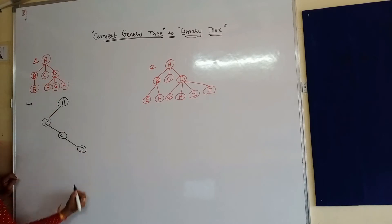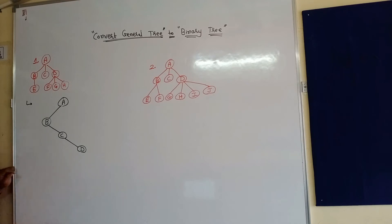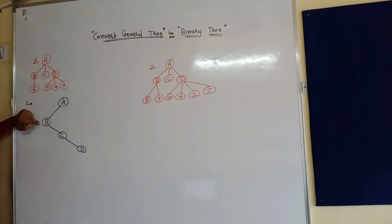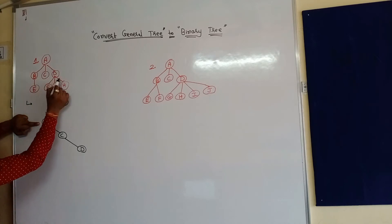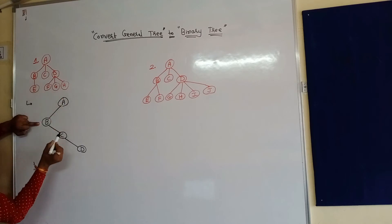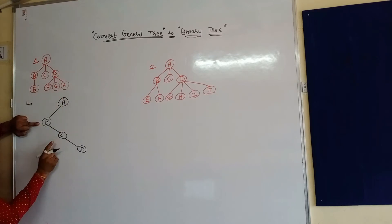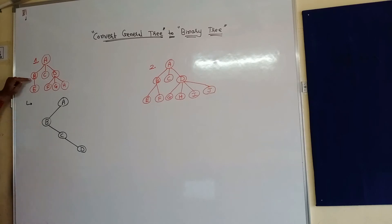So B's right node will be C, and C's right node will be D. To summarize: whatever the root node is, write it at the root; the left-most child of A becomes the left node of the root; and the remaining nodes are placed as right nodes of each other — B's right is C, and C's right is D.